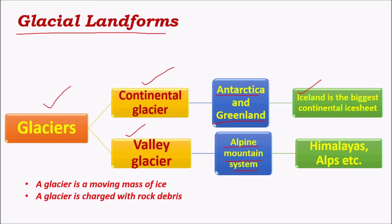In the erosional process, the most important role is played by glaciers because glacial erosion supplies debris to fluvial erosion, that is, to rivers. Rivers receive all their silts mainly from glacially eroded material, as in the Himalayas.